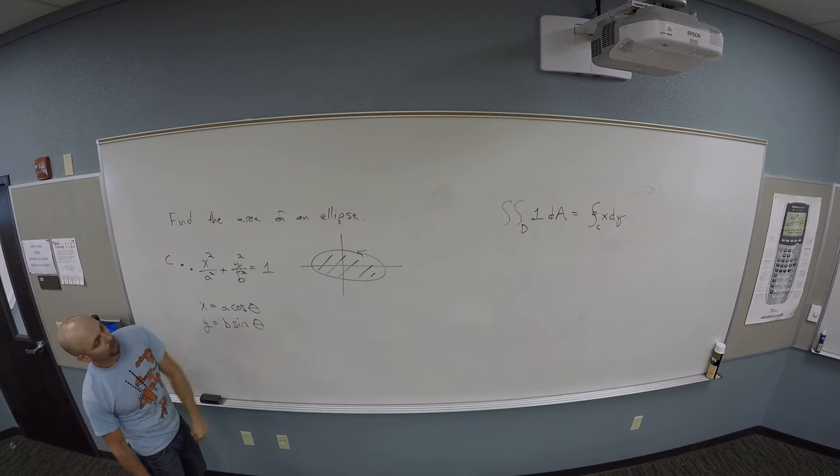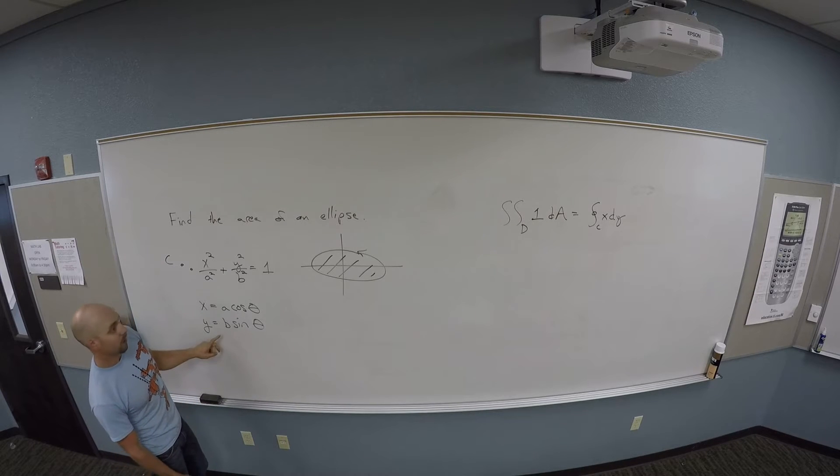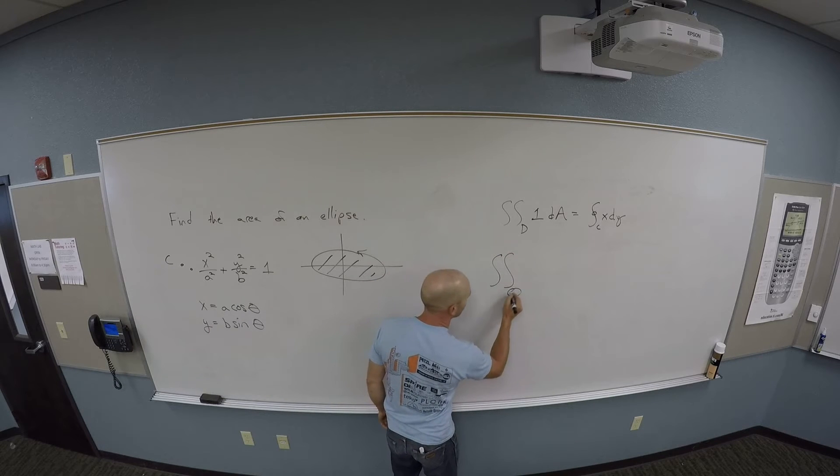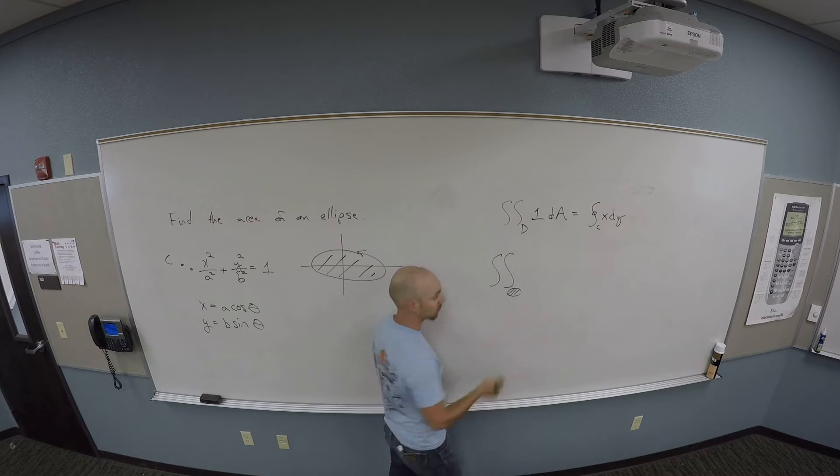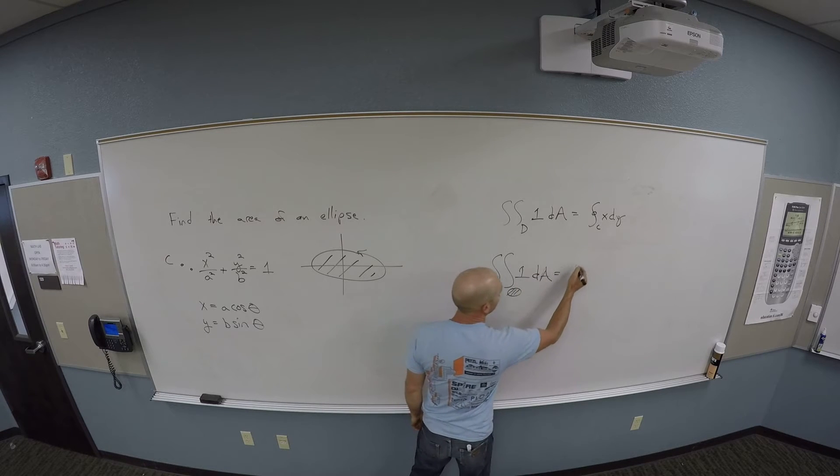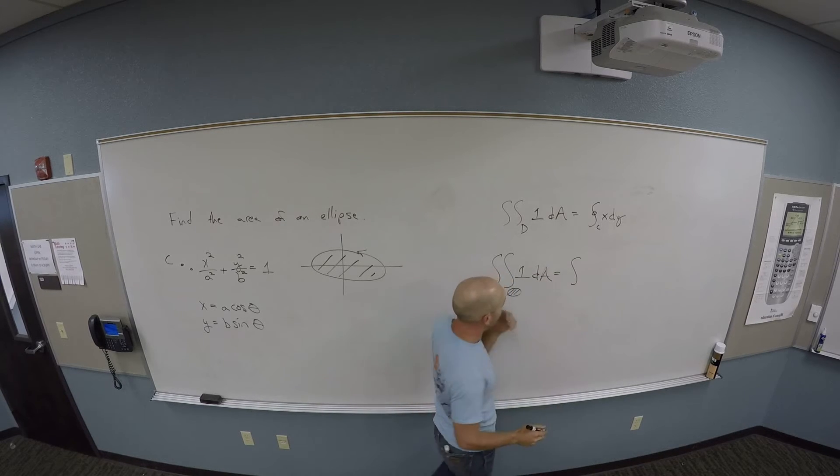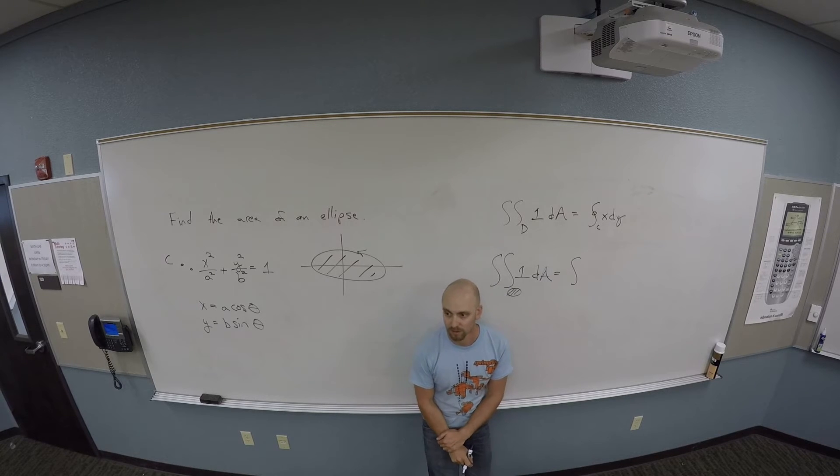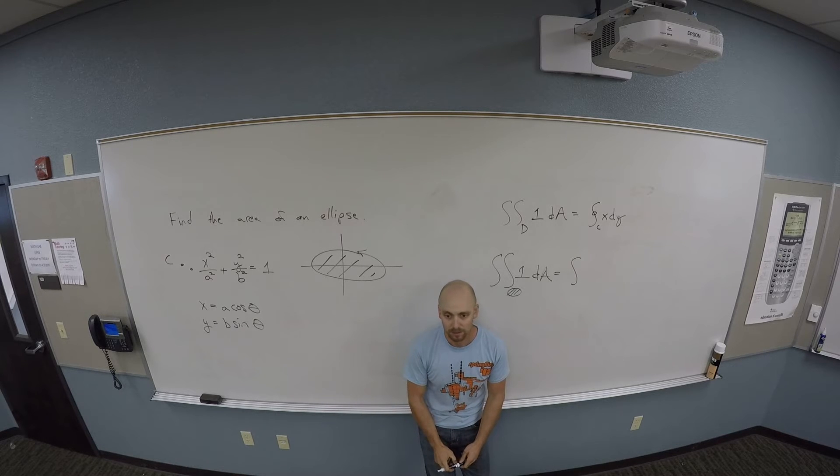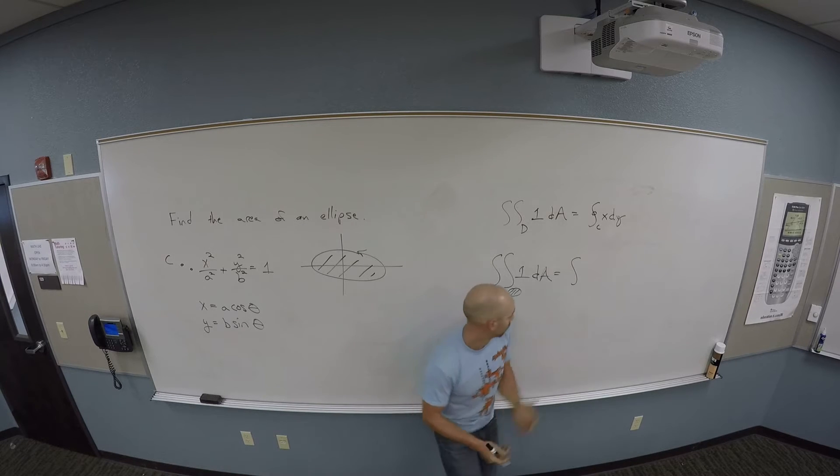So I want to integrate, right? My goal is to integrate over the ellipse of one, the area. That's the integral over the path. Where does this path around the ellipse start and stop in terms of theta? That's just going to be zero to two pi. So I'm going to do the zero to two pi integral of what?